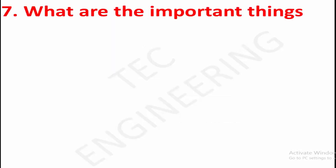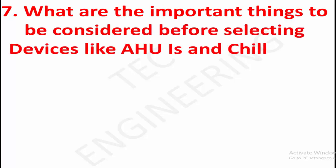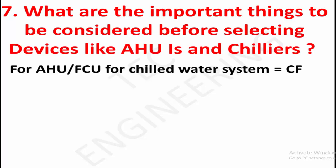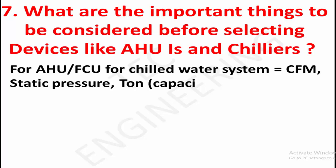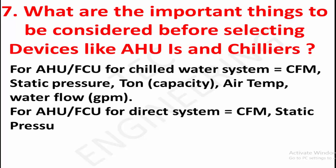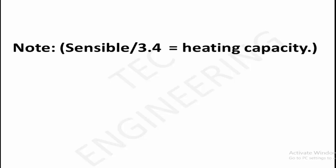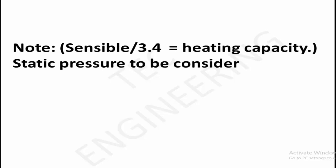What are the important things to consider before selecting devices like AHU and chillers? For AHU/FCU in a chilled water system: CFM, static pressure, ton capacity, air temperature, water flow, and GPM. For AHU/FCU in a direct system: CFM, static pressure, and ton sensible. For chillers: ton, outside air temperature, and GPM. Note: sensible × 3.4 equals heating capacity. Static pressure must be considered for fan selection.